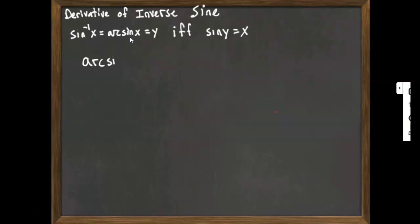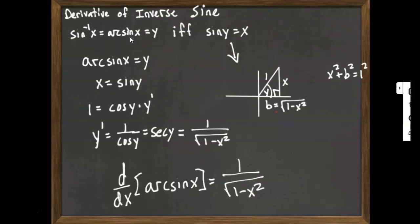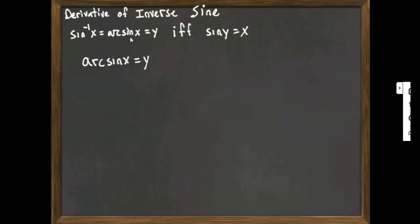So the first thing we do is figure out the derivative of arc sine. We write the equation down as arc sine of x equals y, and we basically want to find y prime. We use our inverse condition: if arc sine of x equals y, then sine of y equals x. So we rewrite that as x equals sine of y. Now we can find y prime, or dy/dx, by using implicit differentiation, because we have things there that we know how to differentiate.